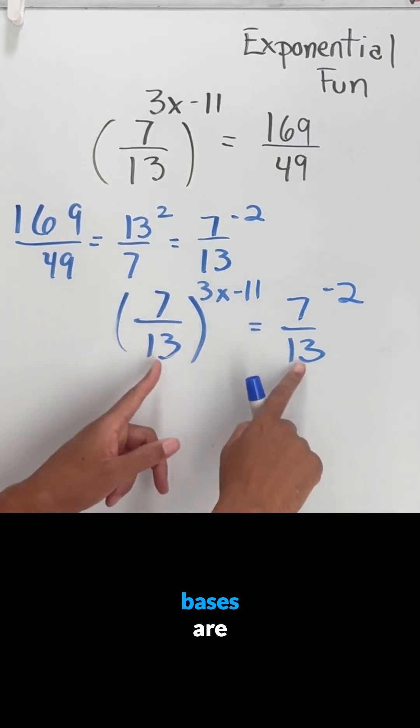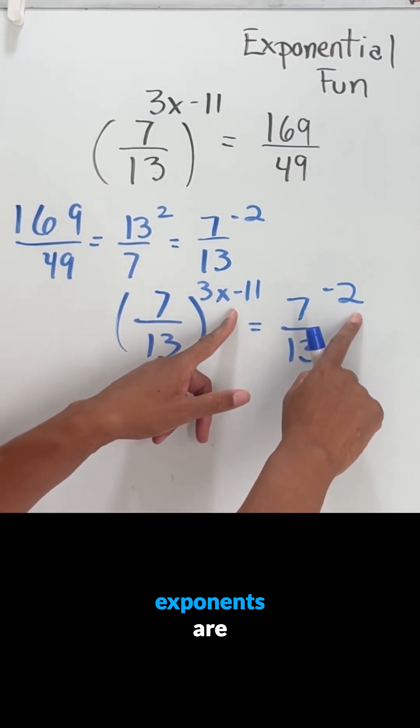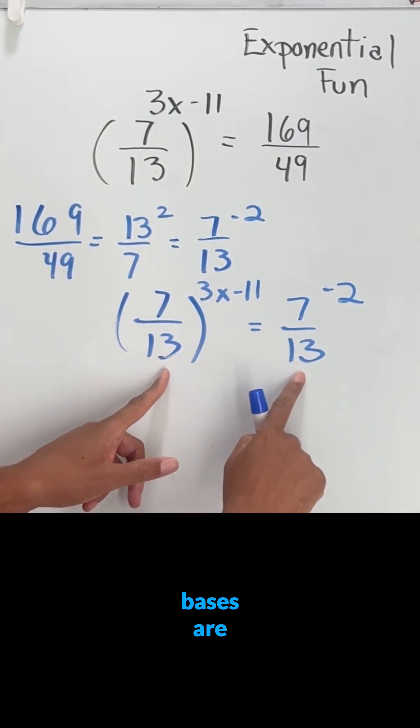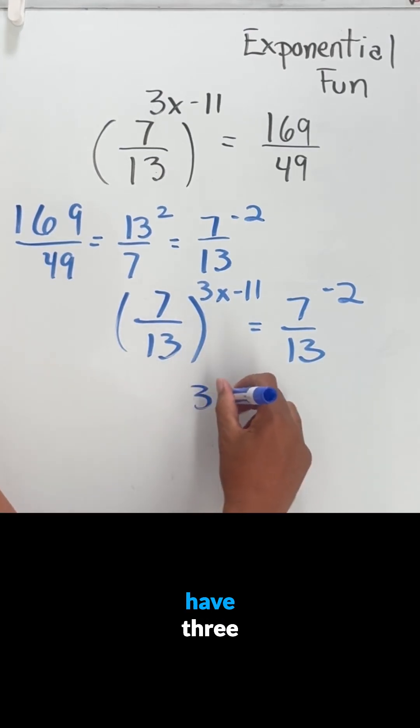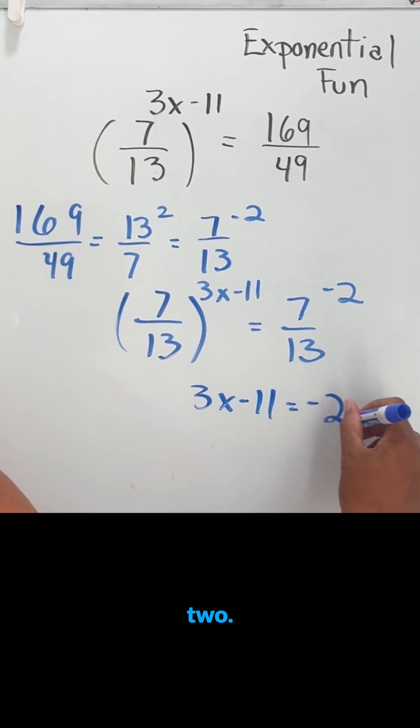So now if the bases are the same, then the exponents are equal. So I'll have 3x minus 11 equals the negative 2.